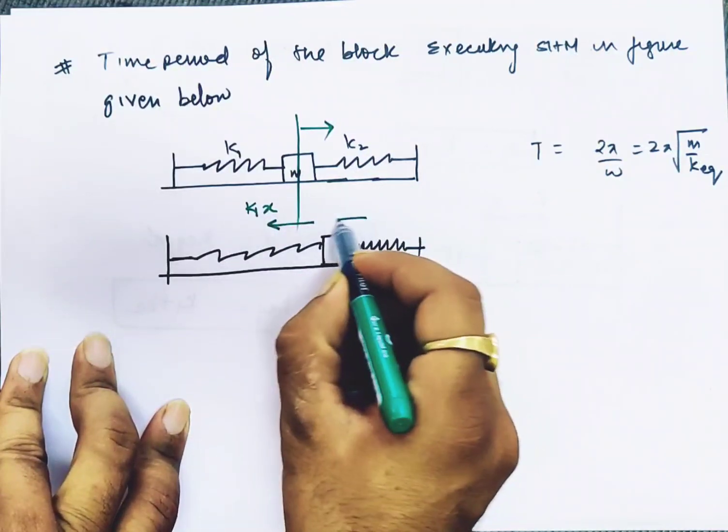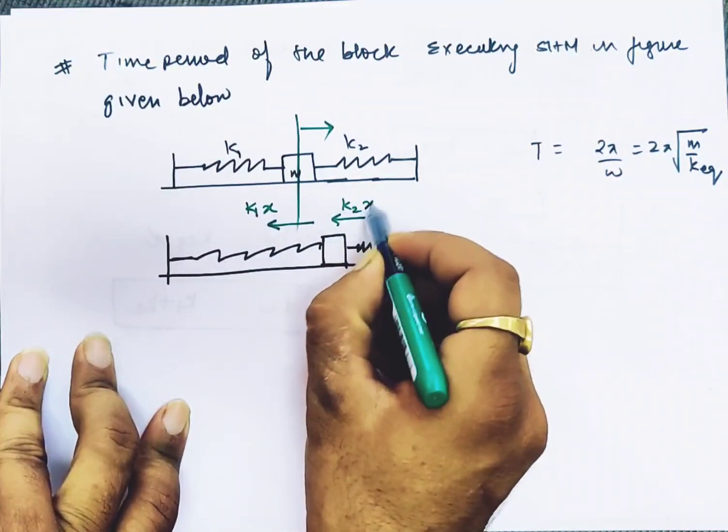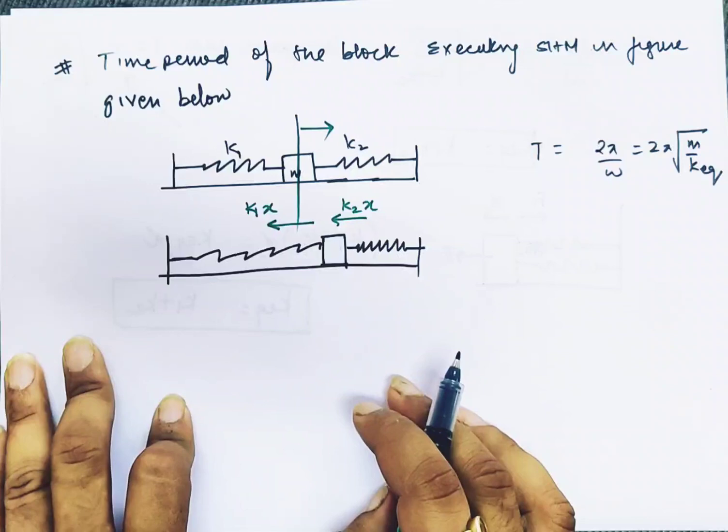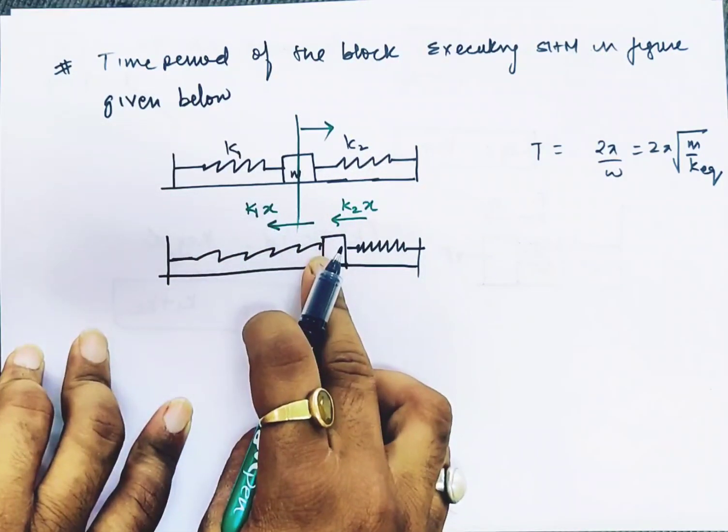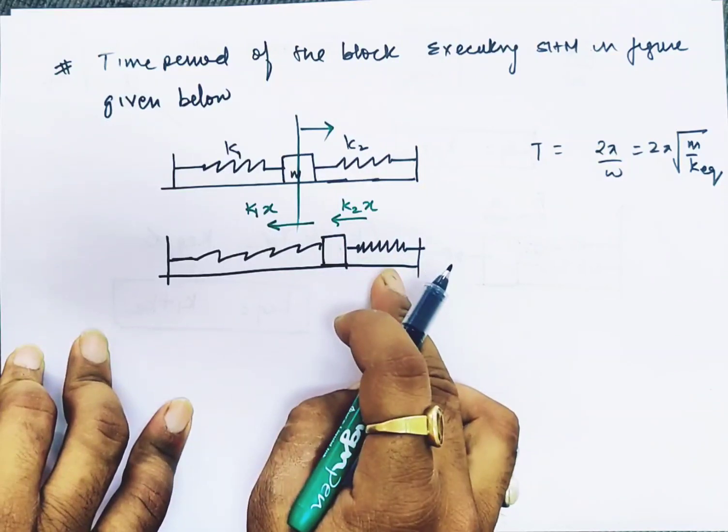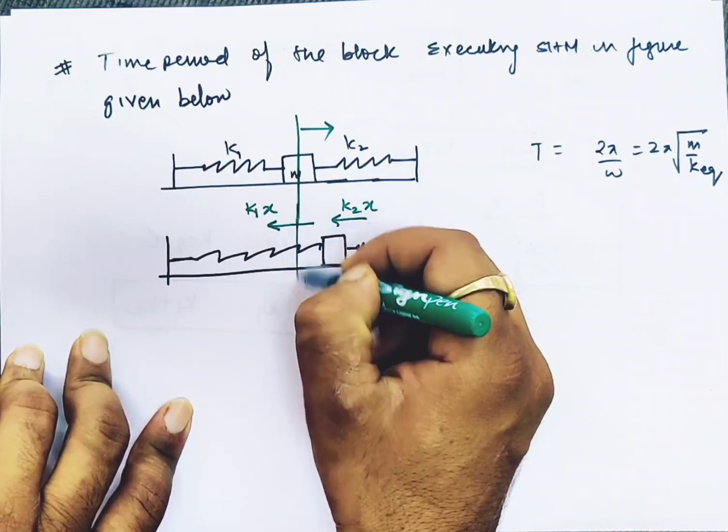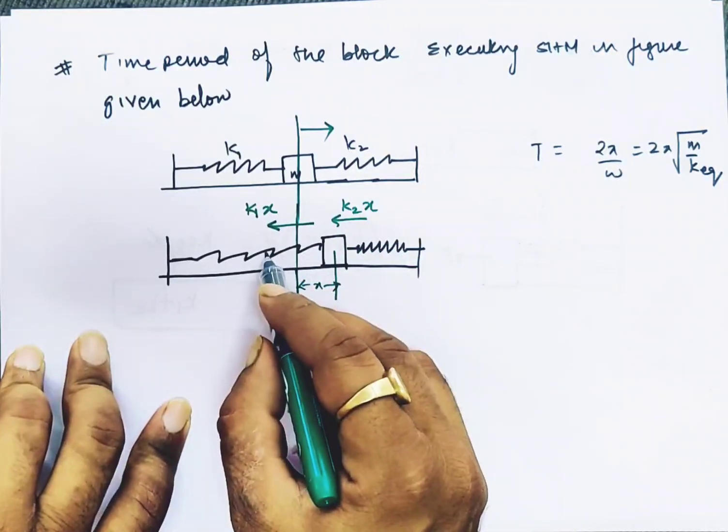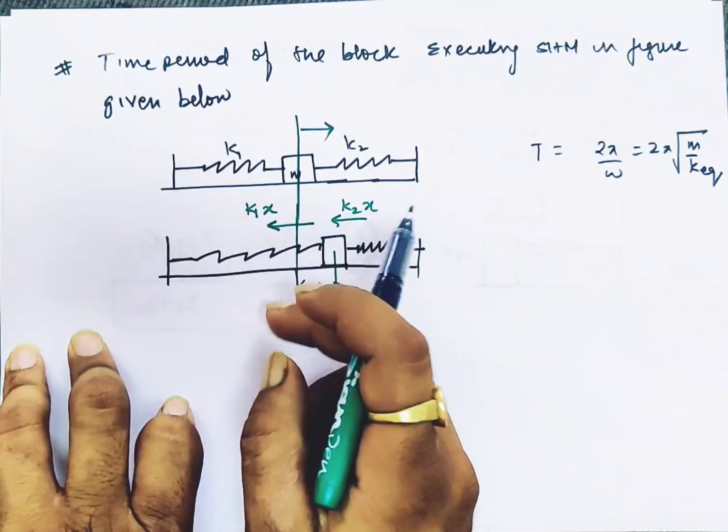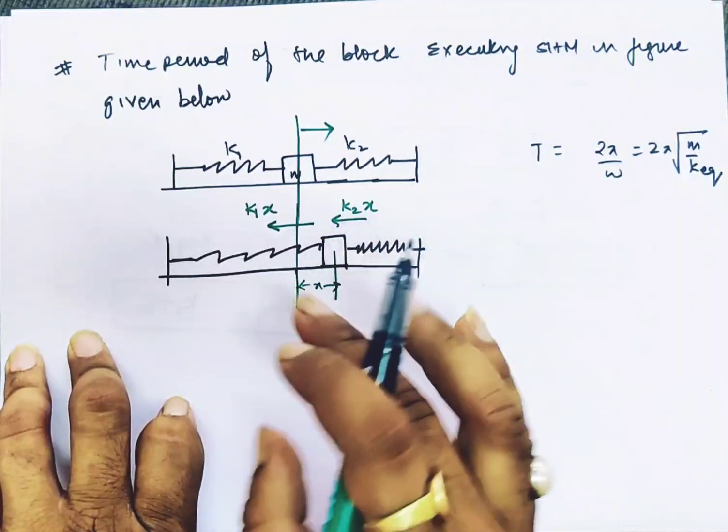So spring 1 has to extend by x and spring 2 has to compress by x.